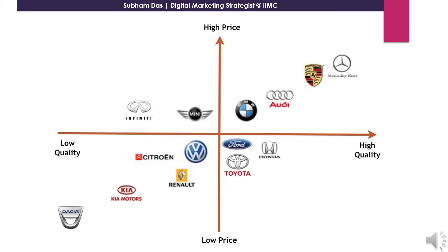At the bottom you have something like Kia Motors, Renault, and Volkswagen. This graph is considering two attributes — price versus quality. As the quality increases, the price also increases, and as the quality decreases, the price also decreases.